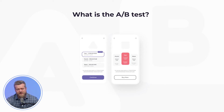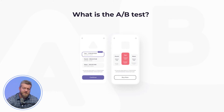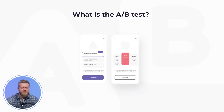So, A-B testing is an online experiment conducted on a website or mobile application to test potential improvements in comparison to a control or original version. Put simply, it allows you to see which variation or version works better for your audience based on statistical analysis.